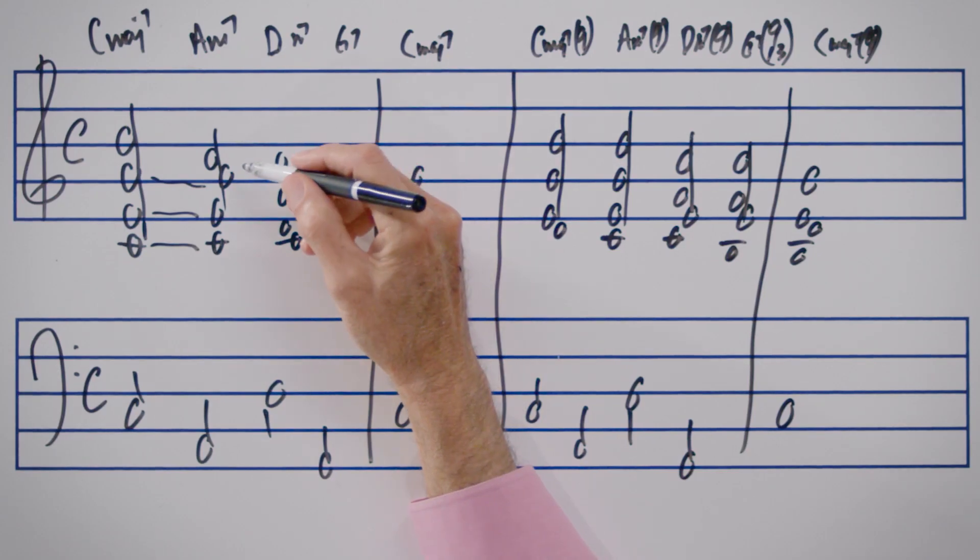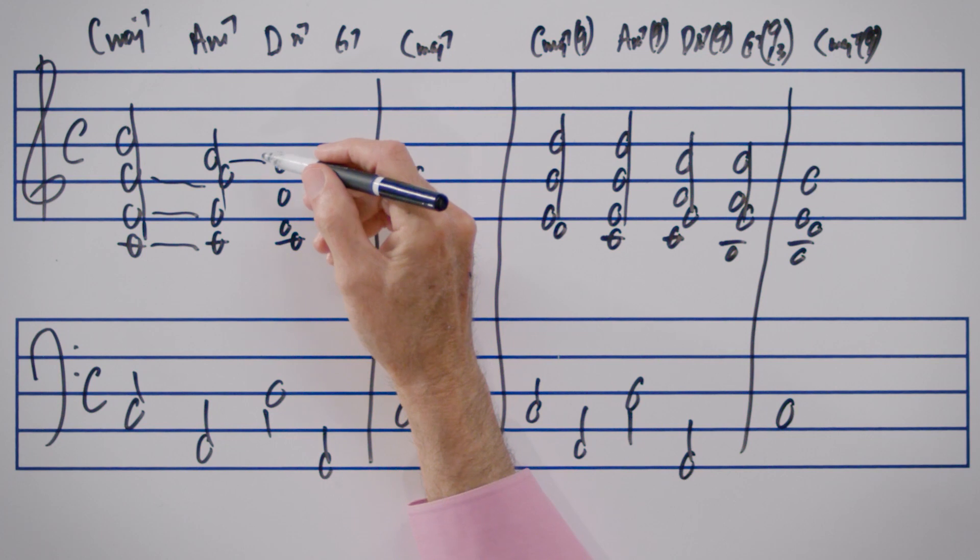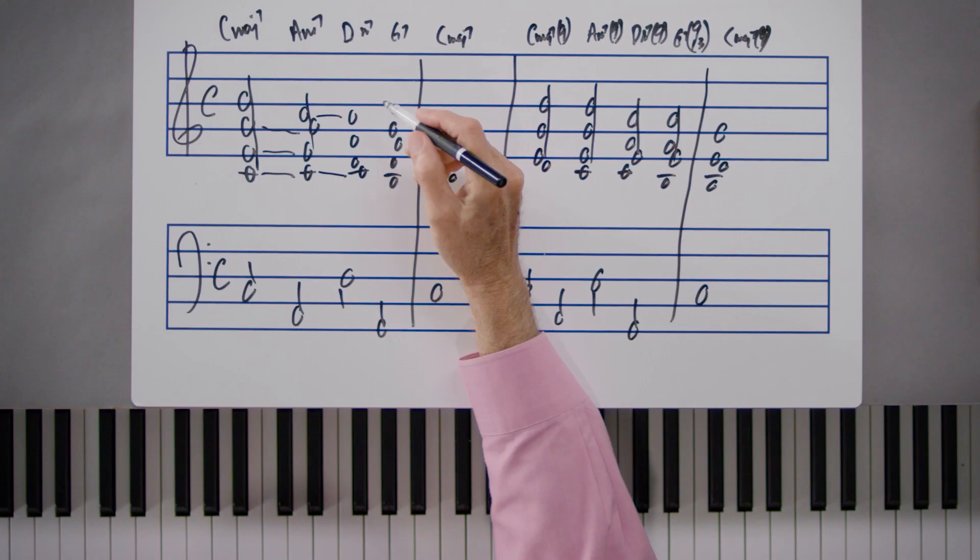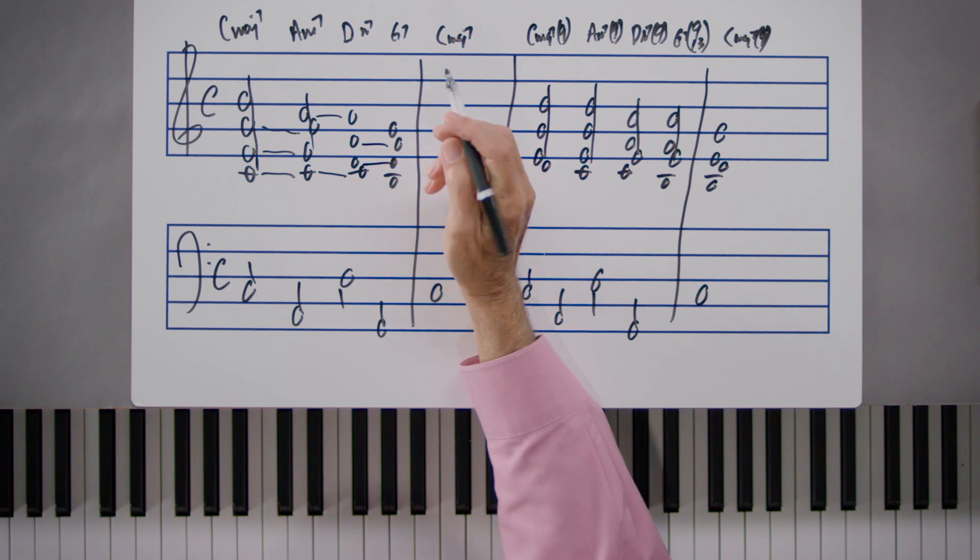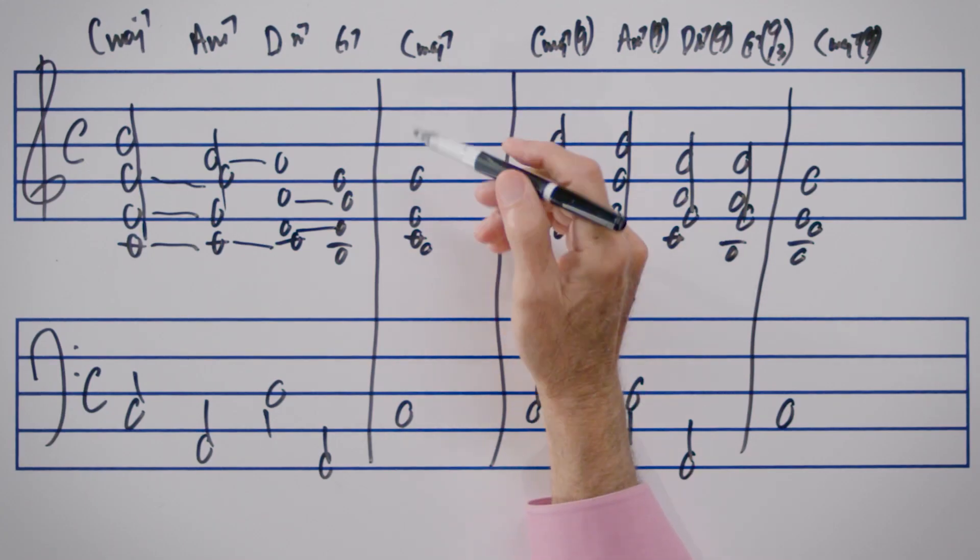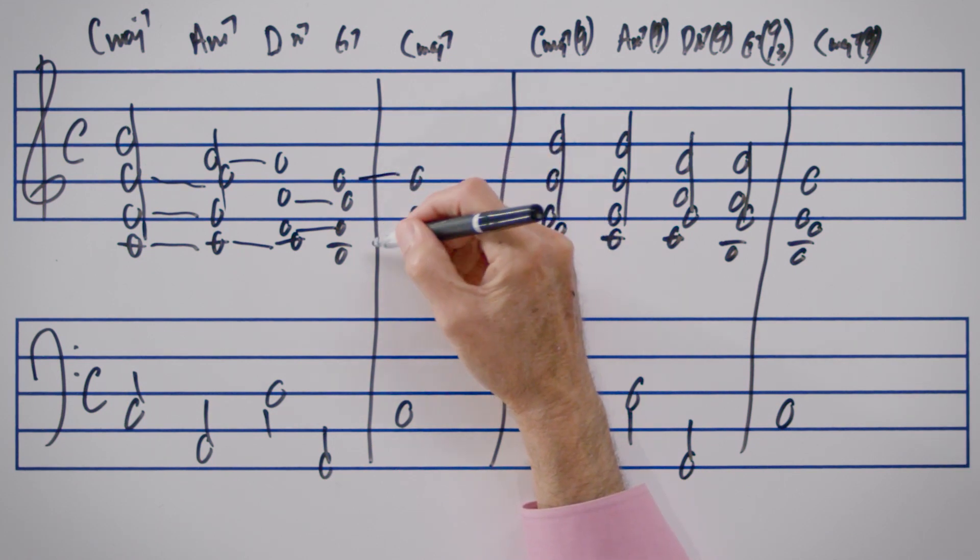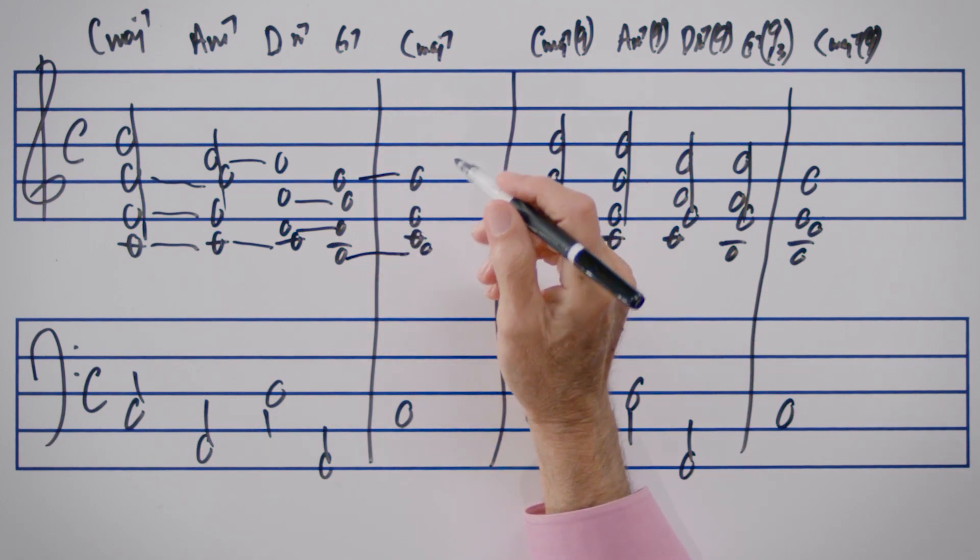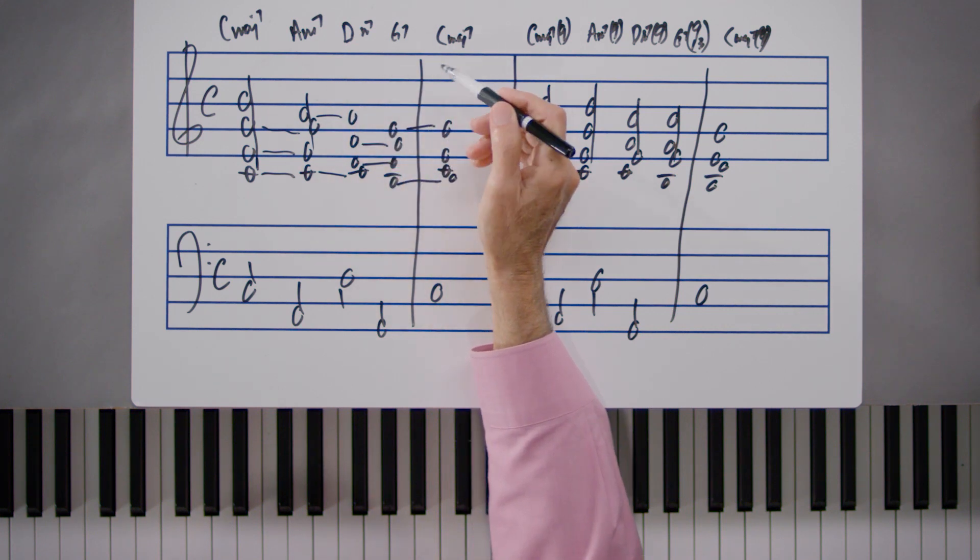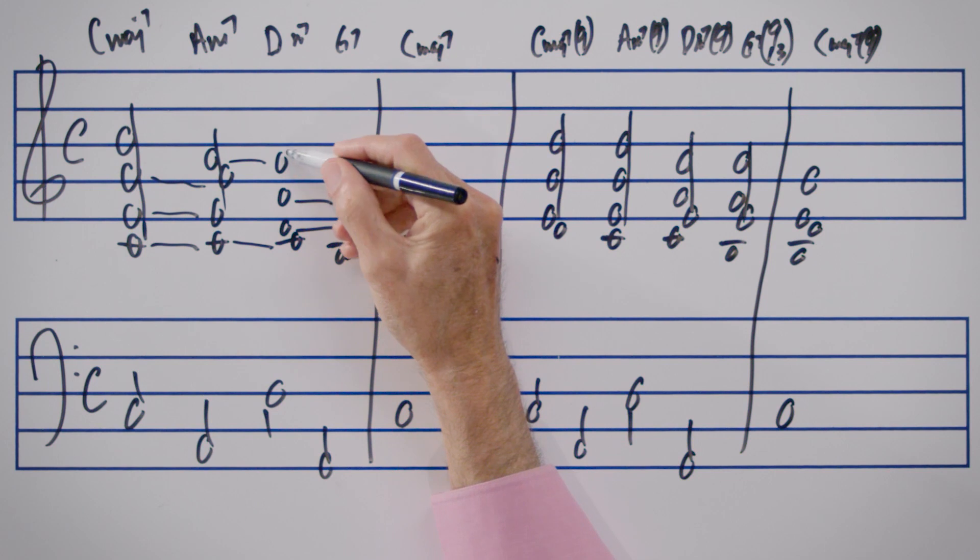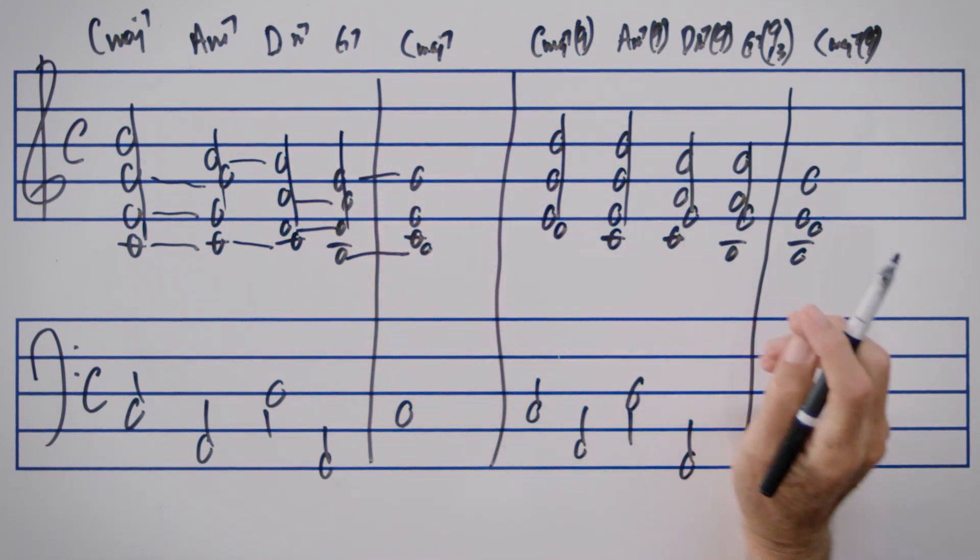In voice leading the A minor 7 to the D minor 7, we have two common tones. The A is a common tone, and the C is a common tone. And then in voice leading the D minor 7 to the G7, we once again have two common tones. The F and the D are both in common between the chords. And then in moving from the G7 to the C major 7, once again, a common tone on G and a common tone on B. So the voice leading of these basic chords built on 1, 6, 2, 5, and 1 would look very much like this through the voice led form, using the basic notes only.